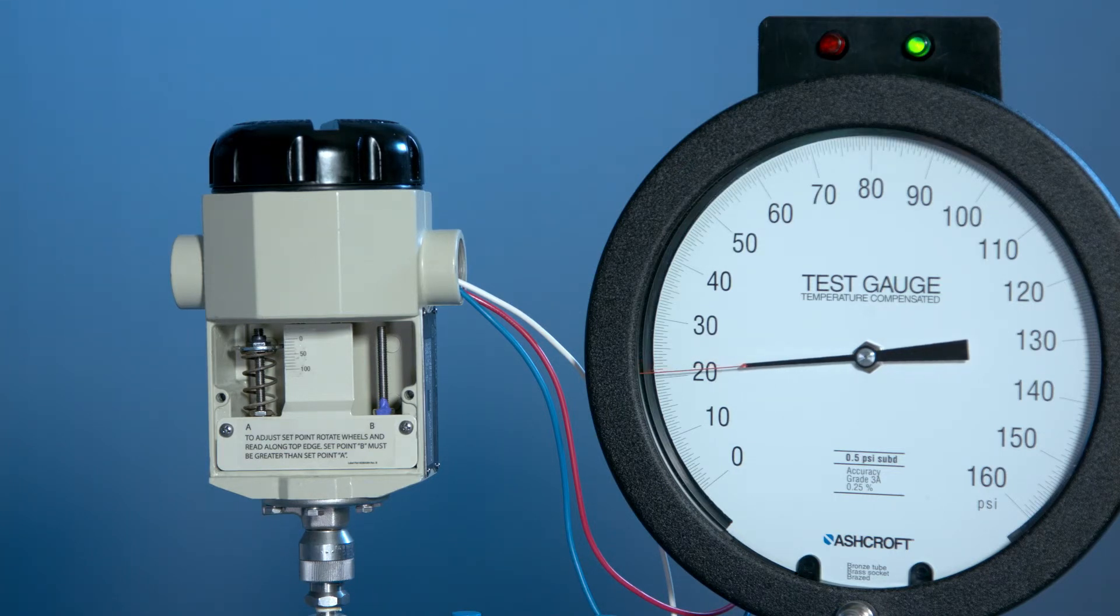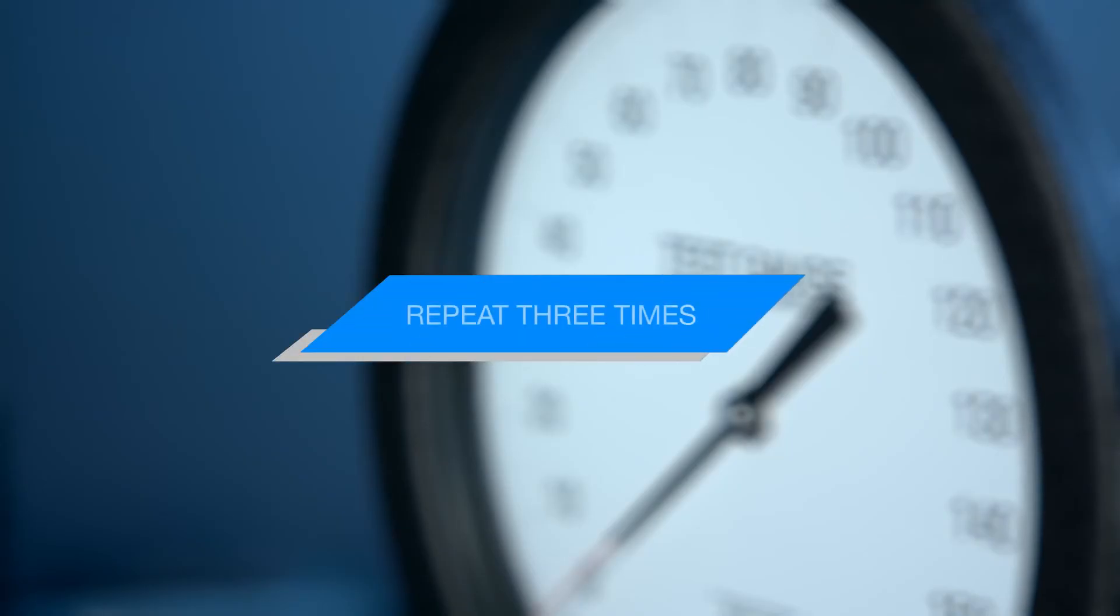From here we would increase our pressure to measure the deadband. It turned on just above 25, so it has a deadband of about five. We would repeat this measurement three times to verify that it was repeatable.